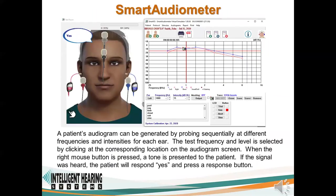The audiometer module allows students to perform behavioral and speech audiometry testing using the SmartVS audiometer interface. By clicking on the audiogram screen, you can select the frequencies and intensities to test. Doing a right mouse click outputs a stimulus. A response indicator shows if the patient has responded or not.